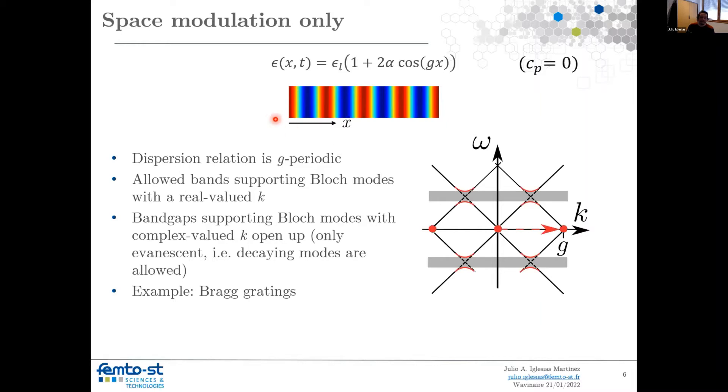Let's start with the simplest case, or more known case, that is modulated in space only, such as the Bragg grating. Then we can say that this is the steadiest case, where the modulation velocity is equal to zero, and we have a lot of properties that are interesting. For starting, this dispersion relationship is g periodic in k.